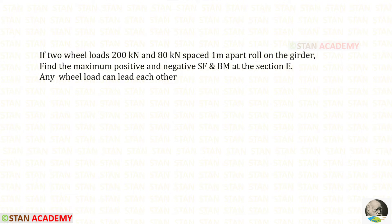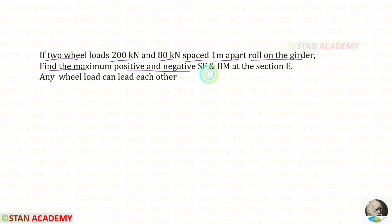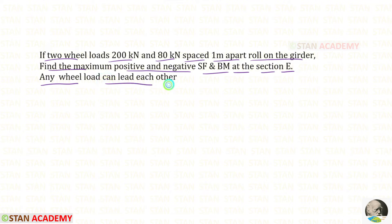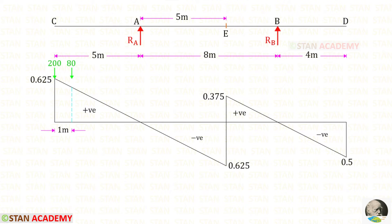Now let us do the solution for this question. Two wheel loads of 200 kN and 80 kN spaced one meter apart roll on the girder. Find the maximum positive and negative shear force and bending moment at section E. Any wheel load can lead each other. The two wheel loads are 200 kN and 80 kN, spaced at one meter.